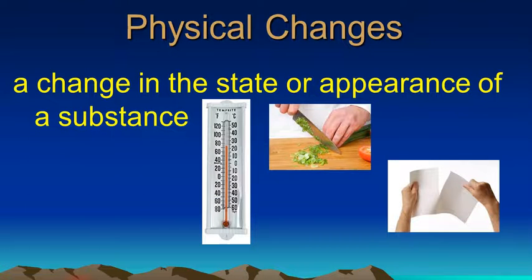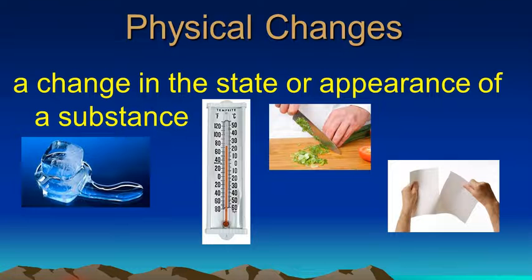Heating something up or cooling it down, those are physical changes as well. You're not changing what the object is. You're just changing how warm or how cool it is. Or in this case, the melting of a piece of ice. Melting is also a physical change because the ice was water when it was ice. And when it melts, it's still water. So changing state is also just a physical change.